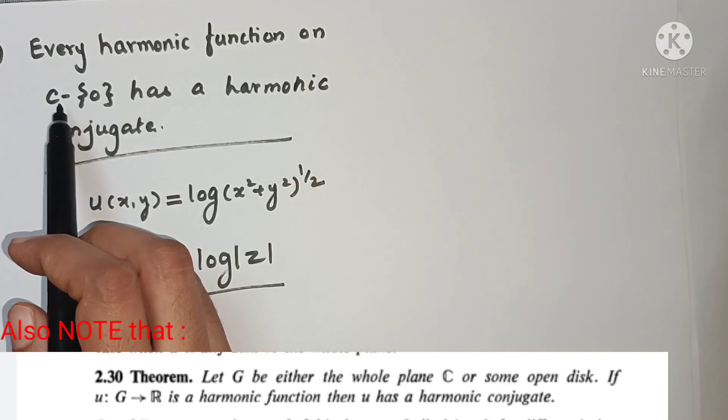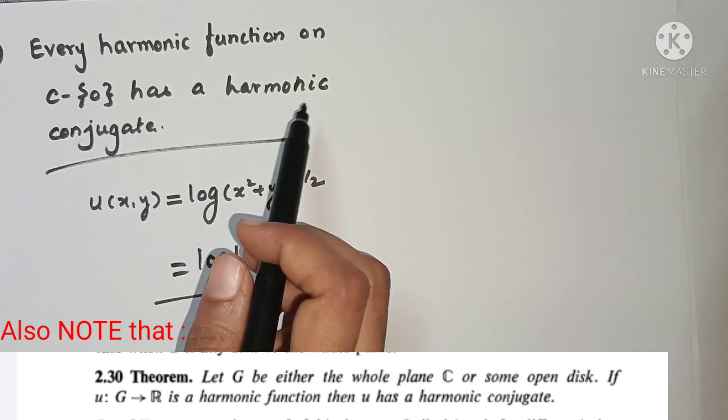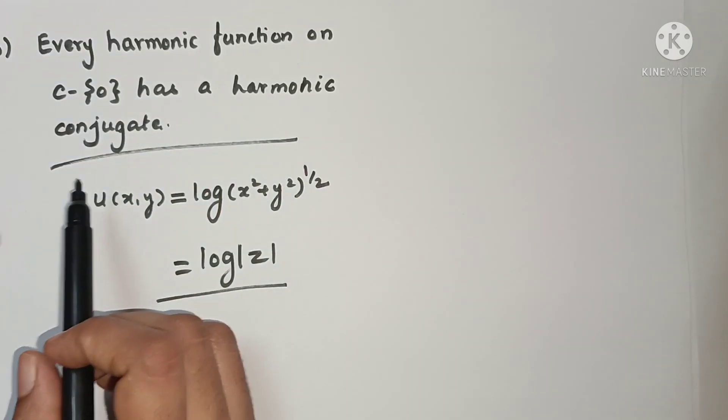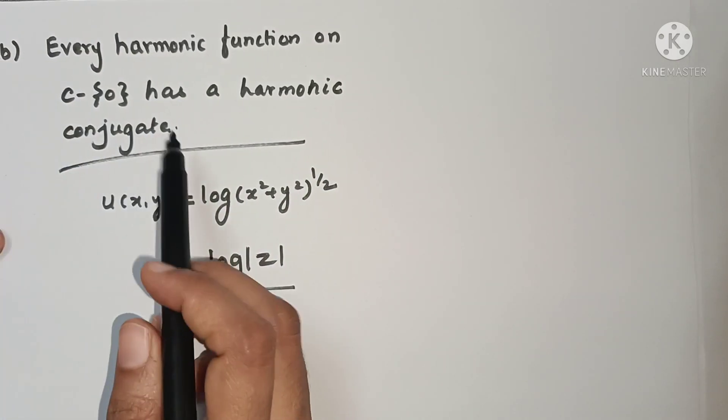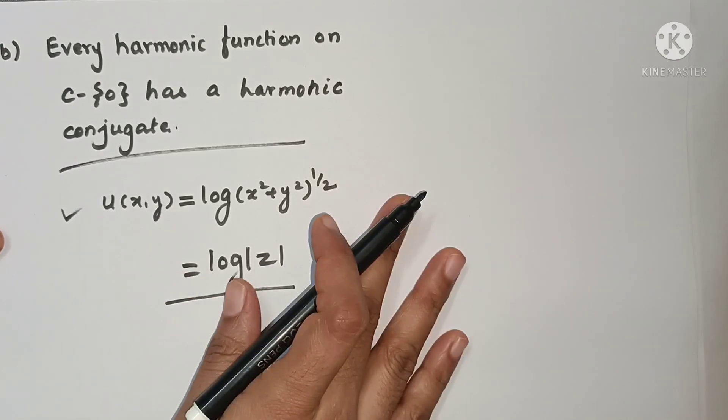Which is a harmonic function on C minus 0, but it does not have a harmonic conjugate. So statement B, this example is enough to discard it. So here we have the options.